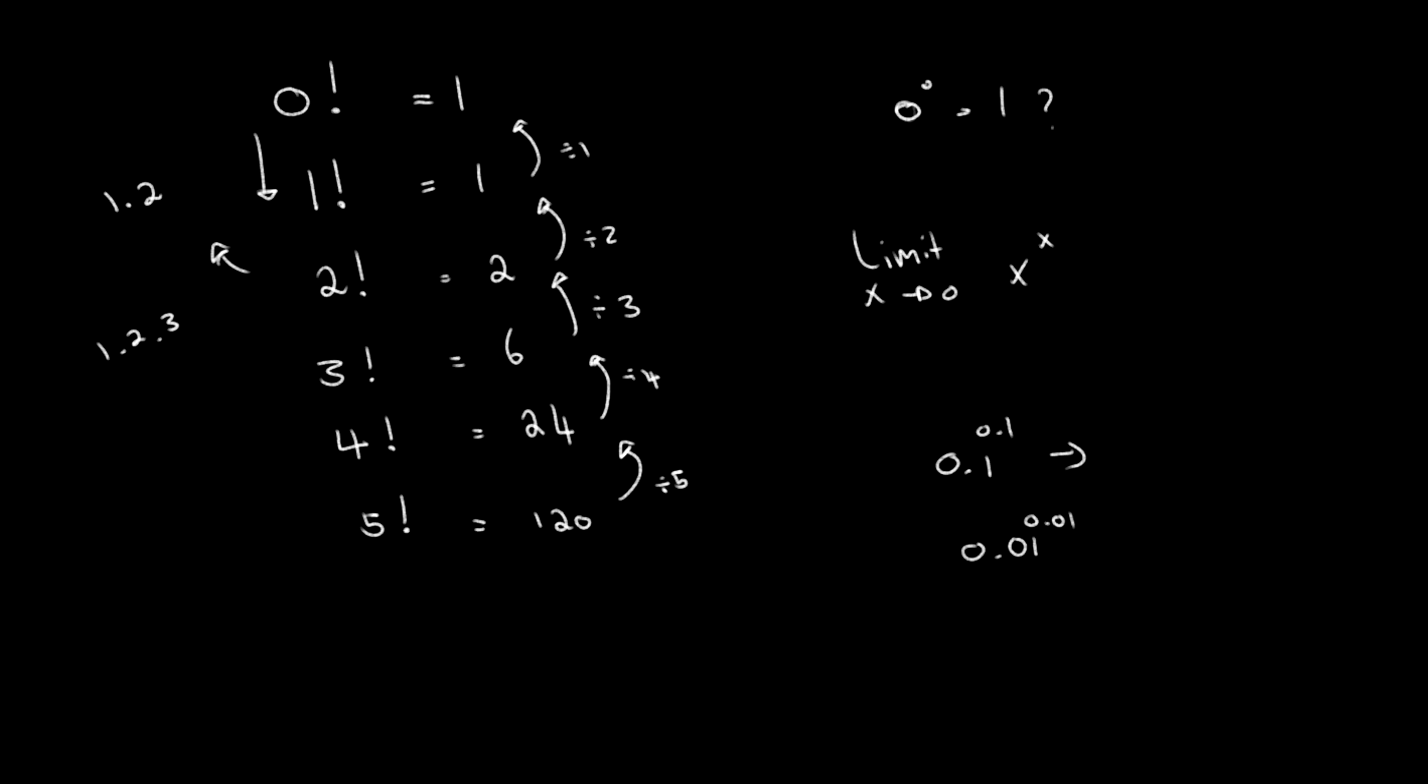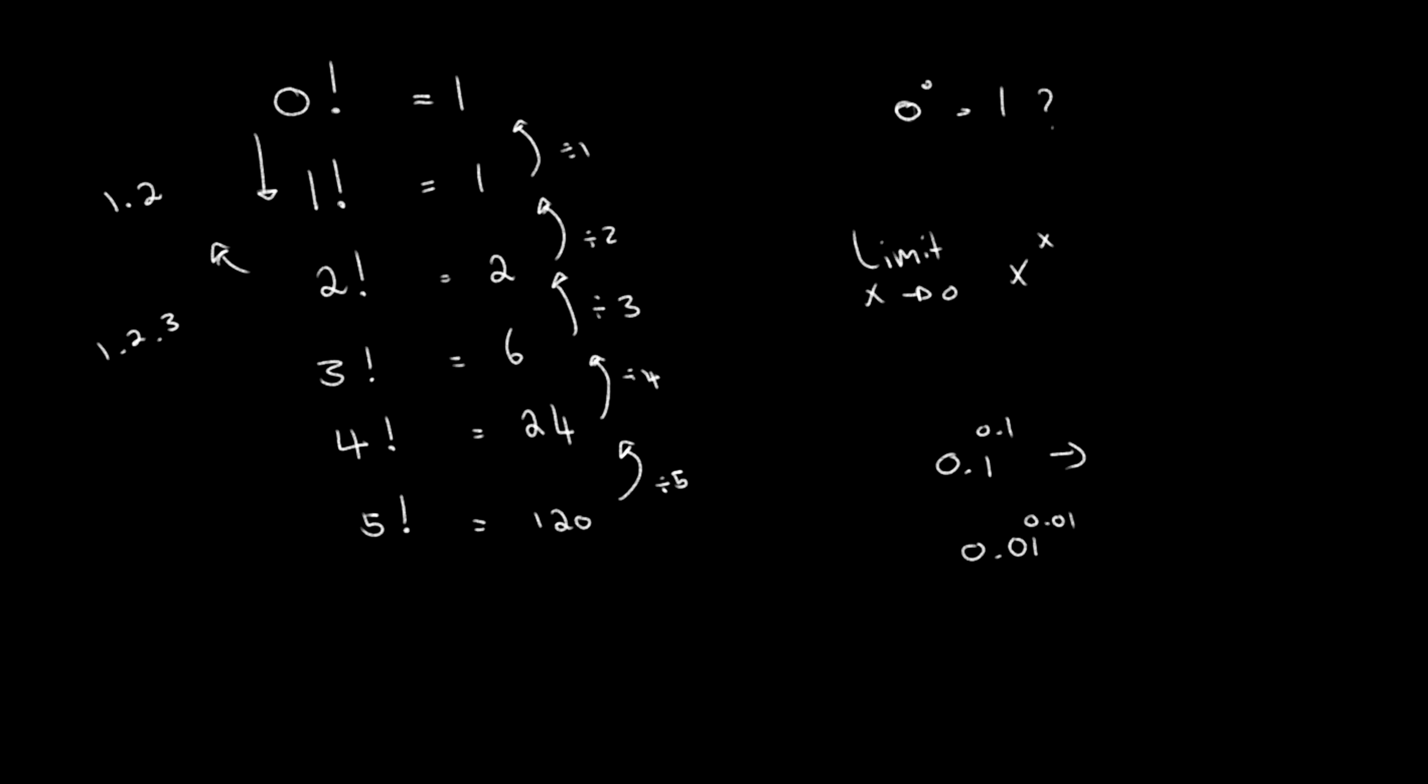So what does that tell me? That tells me that the limit as x approaches 0, in this case where we have 0 raised to the 0, is in fact going to be 1 since my answer is getting smaller and smaller and smaller.